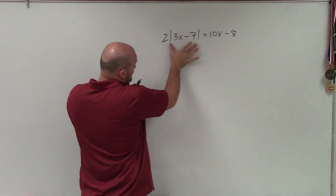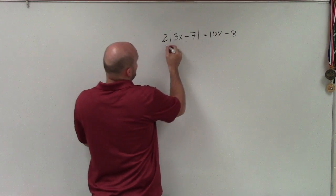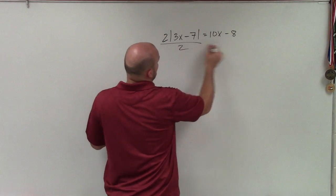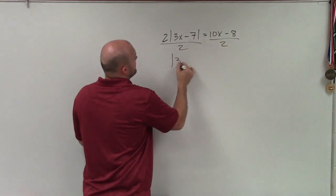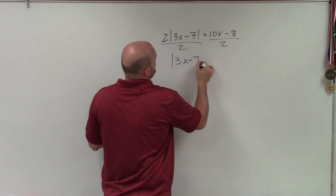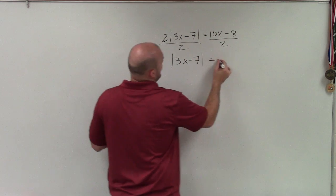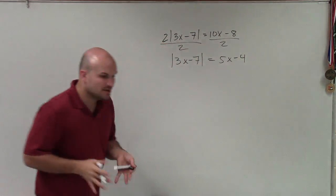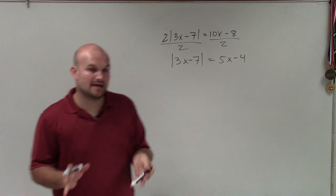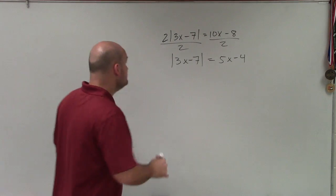To isolate this absolute value, I'm going to divide by two on both sides. By dividing by two on both sides, I now obtain 5x minus 4. So now I can set up two cases.